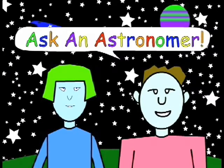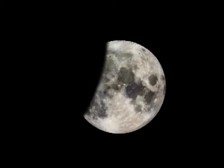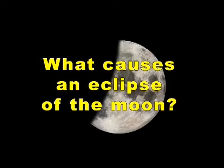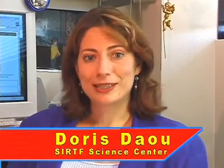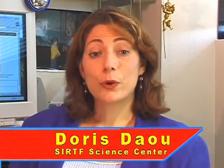Ask an astronomer. What causes an eclipse of the moon? An eclipse is actually nothing more than a shadow. In the case of a lunar eclipse, it's the shadow that the Earth casts on the moon.